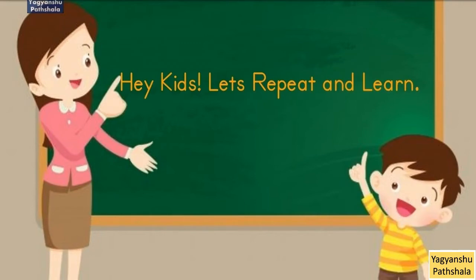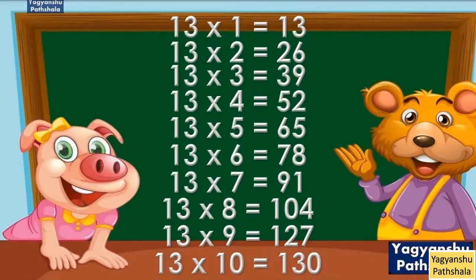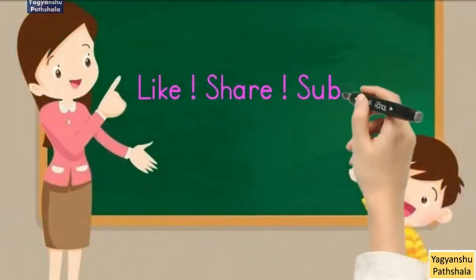Hey kids, let's repeat and learn. 13 times 1 equals 13. 13 times 2 equals 26. 13 times 3 equals 39. 13 times 4 equals 52. 13 times 5 equals 65. 13 times 6 equals 78. 13 times 7 equals 91. 13 times 8 equals 104. 13 times 9 equals 117. 13 times 10 equals 130.